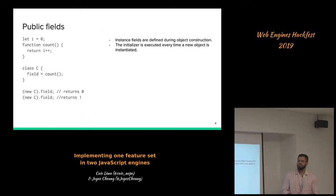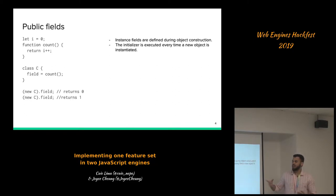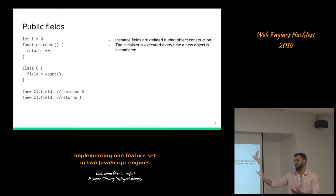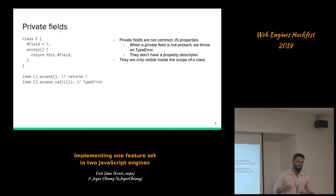Let's talk about what public fields are. In the class, we have this new syntactic form where we have 'field equals count'. Count is a function that basically iterates over an incrementer. For the first evaluation it returns 0, then 1. This means that the initializers of the class fields are executed every time a new object is created. The new object contains a property named 'field' and the initializer is evaluated and installed in every single instance.